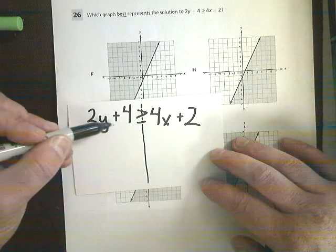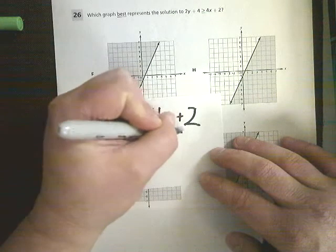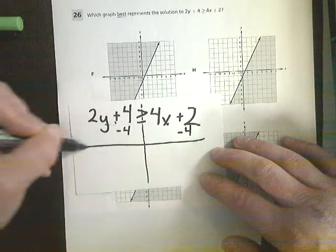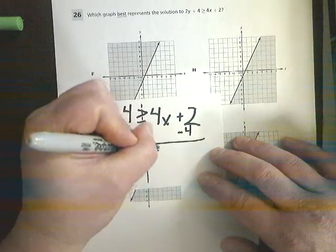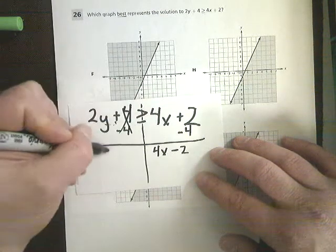2y plus 4. In order to get y by itself, the first thing I need to do is eliminate plus 4, so I'm going to subtract 4. And I have to subtract it from 2 because it doesn't have an x. You can't do anything to that x. You have to leave it. 2 minus 4 is negative 2. Those cancel. Bring down 2y.